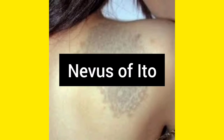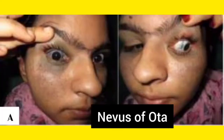This is the Nevus of Ito — you can see it occurs on the shoulder. The picture shows hyperpigmentation that occurs in the dermis layer. Now this picture is showing Nevus of Ota — 'O,' circular — it occurs around the eye.